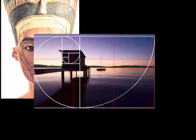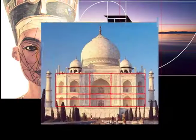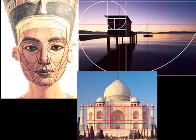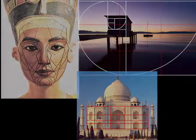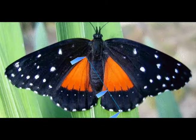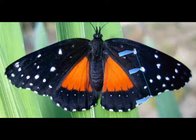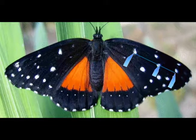What makes images such as these so appealing? The Golden Ratio provides a mathematical explanation for why we find certain images beautiful.